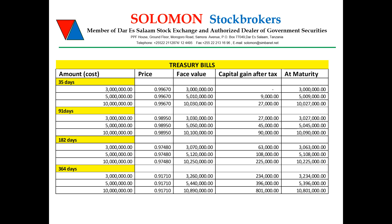While this return may not look very attractive, you can also look at what happens if the investor invests the same amount for a longer tenure — maybe a year, 364 days. If the investor invests the same 5 million for a year, then the treasury bill will have a face value of 5,440,000, meaning that investor will gain 396,000 after tax. So at maturity, the investor will get 5,396,000.